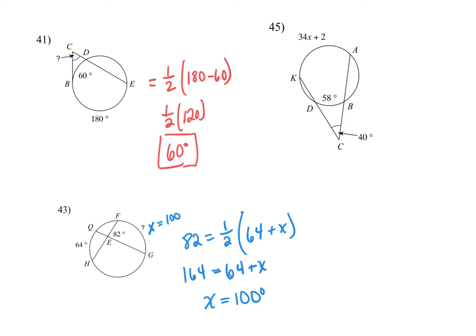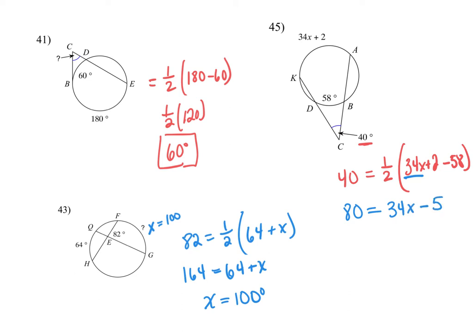The next section is the same concept but with variables — solve for x. These intersect on the outside, so 40 should equal half of the difference: half of 34x plus 2 minus 58. Multiply both sides by 2, combine like terms — 34x plus 2 minus 58 is minus 56 — then add it over and divide. You should get x equals 4.